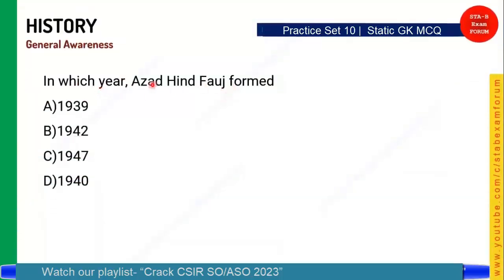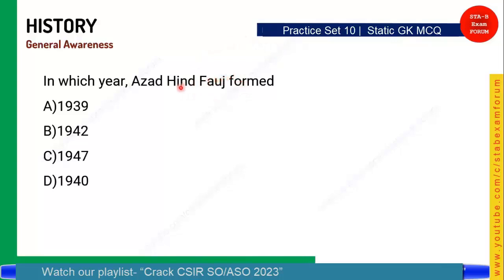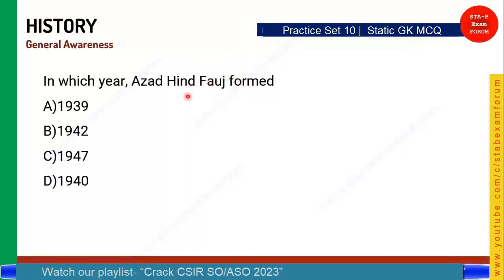In which year was Azad Hind Fauj formed? It was formed by Captain Mohan Singh, and one of the famous leaders associated with it is Netaji Subhash Chandra Bose. The correct answer is Option B — 1942. In 1942, Captain Mohan Singh formed the Azad Hind Fauj.